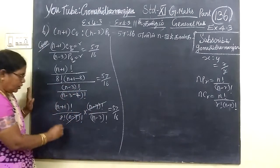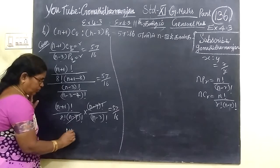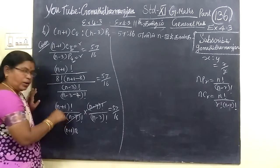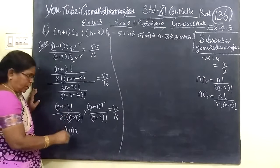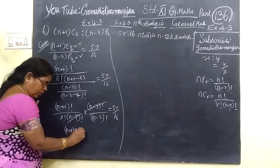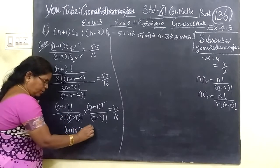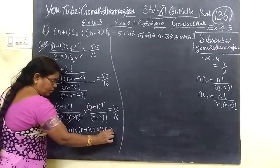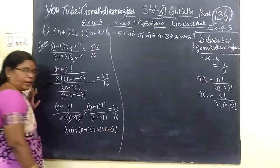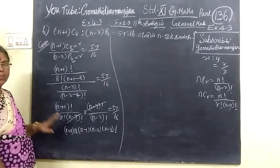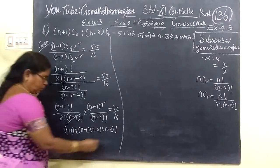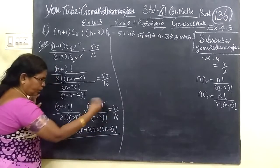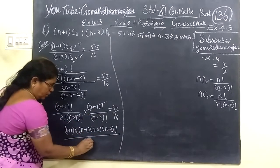So n minus r cancels here — many times equal to 1 — and here cancels already. Here n minus 7, n minus 7 getting canceled. This is like 57 by 16. Then n minus 1, n minus 1.